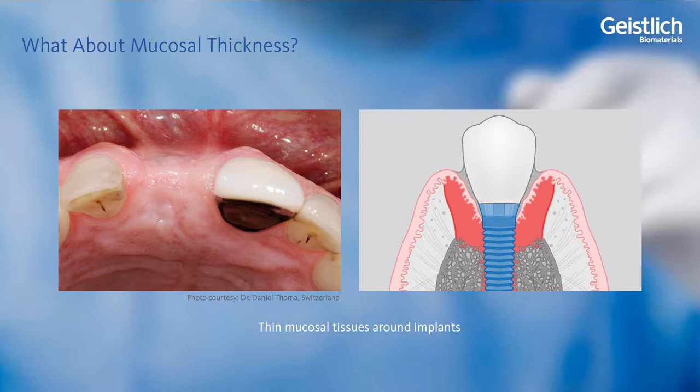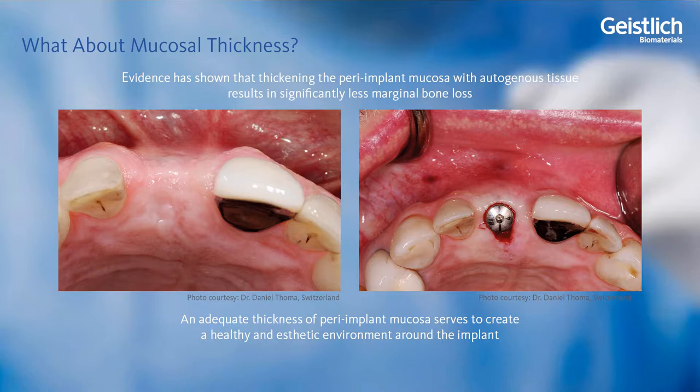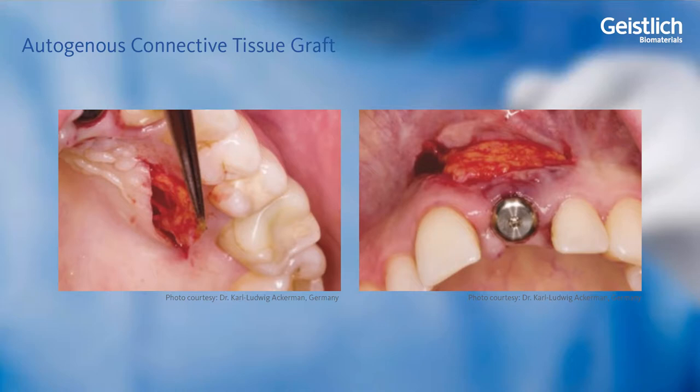What about the clinical case where there is a lack of mucosal volume? Around a dental prosthesis or natural tooth, the lack of soft tissue thickness can lead to less desirable aesthetics. Furthermore, evidence suggests that adequate mucosal thickness leads to a healthier peri-implant tissue complex. For decades, autogenous soft tissue grafts have been used to thicken the mucosal environment around teeth, implants, and edentulous sites.